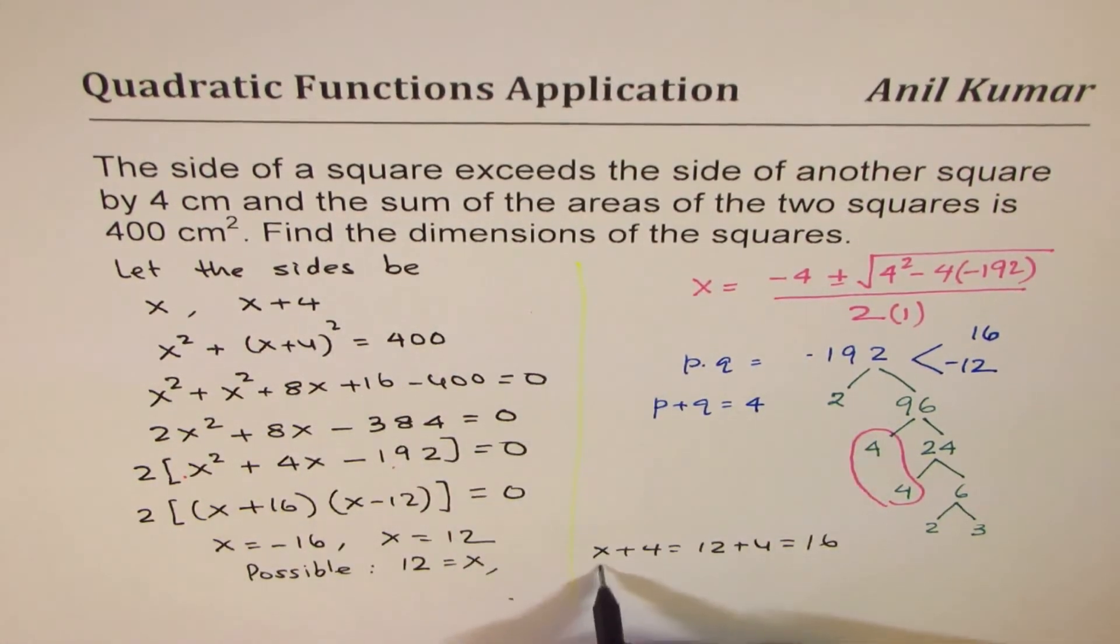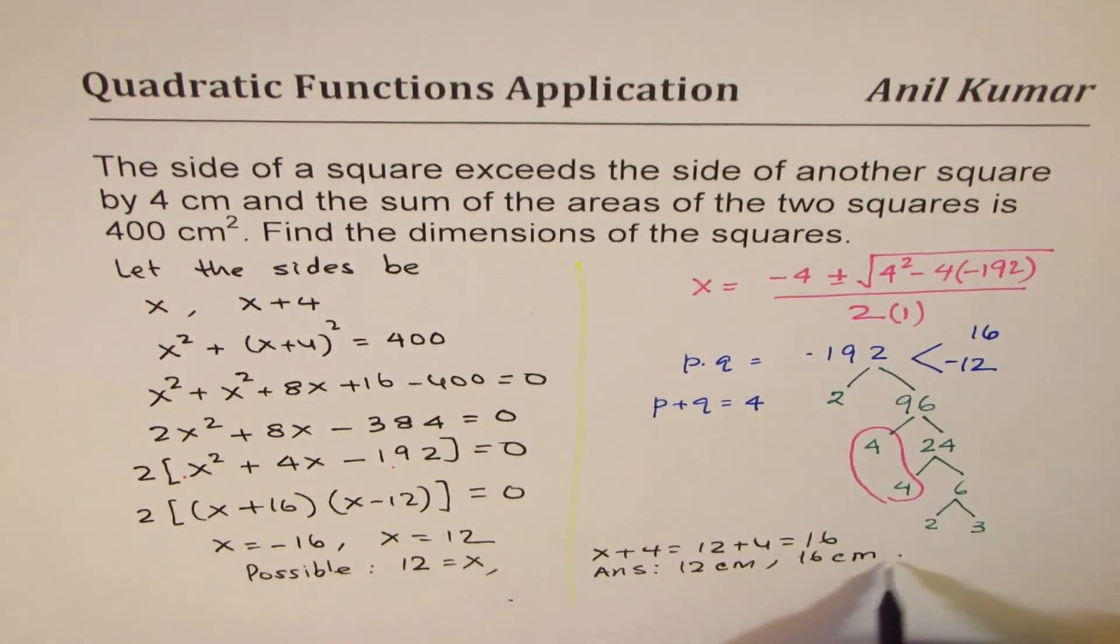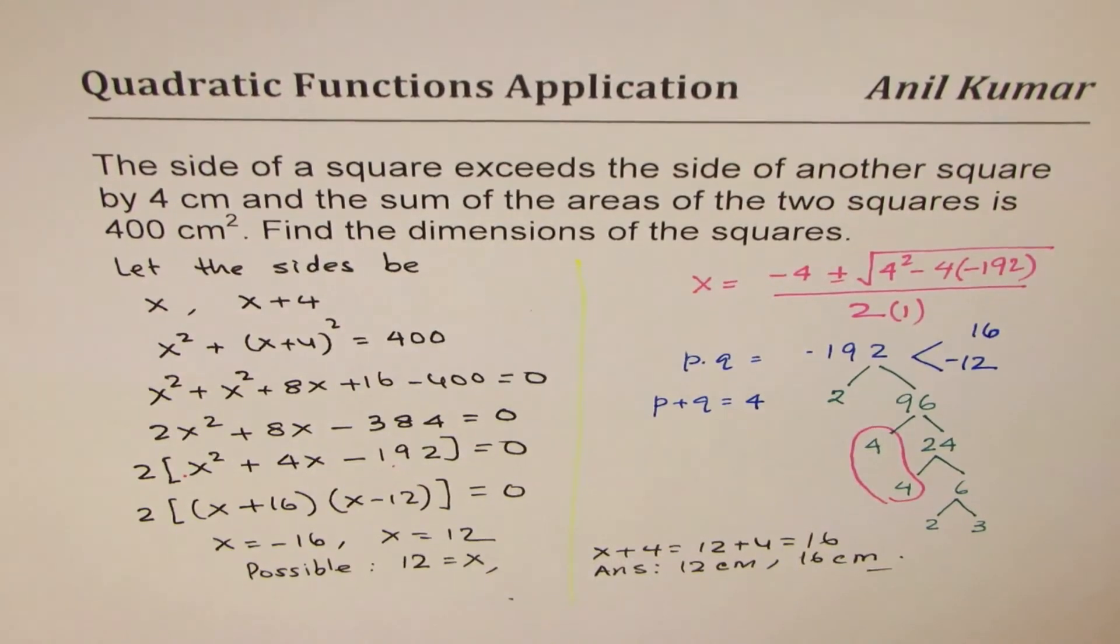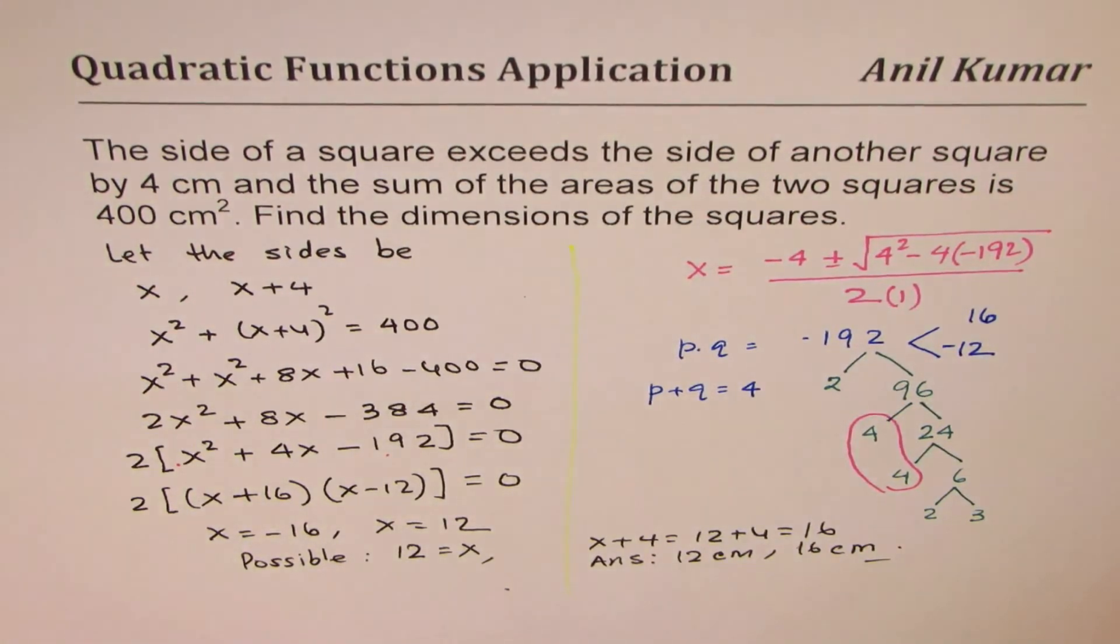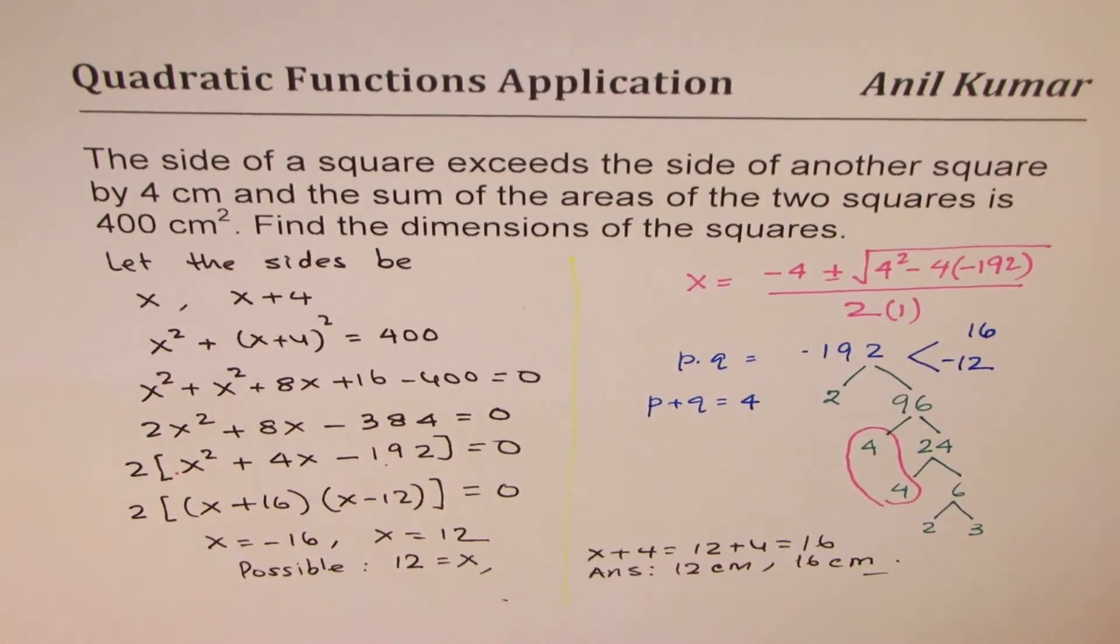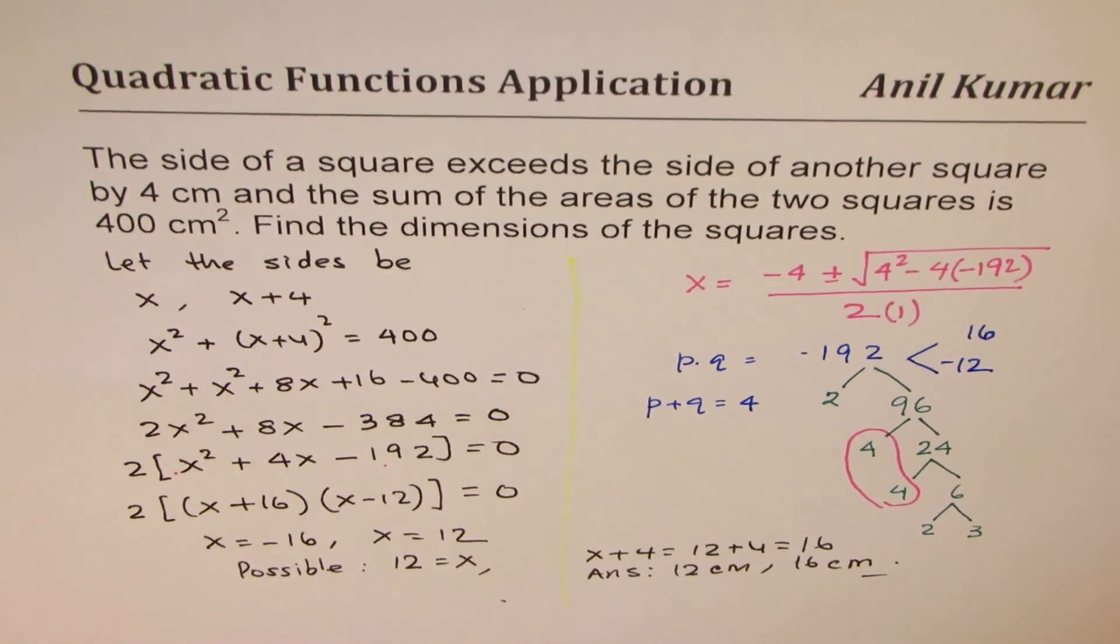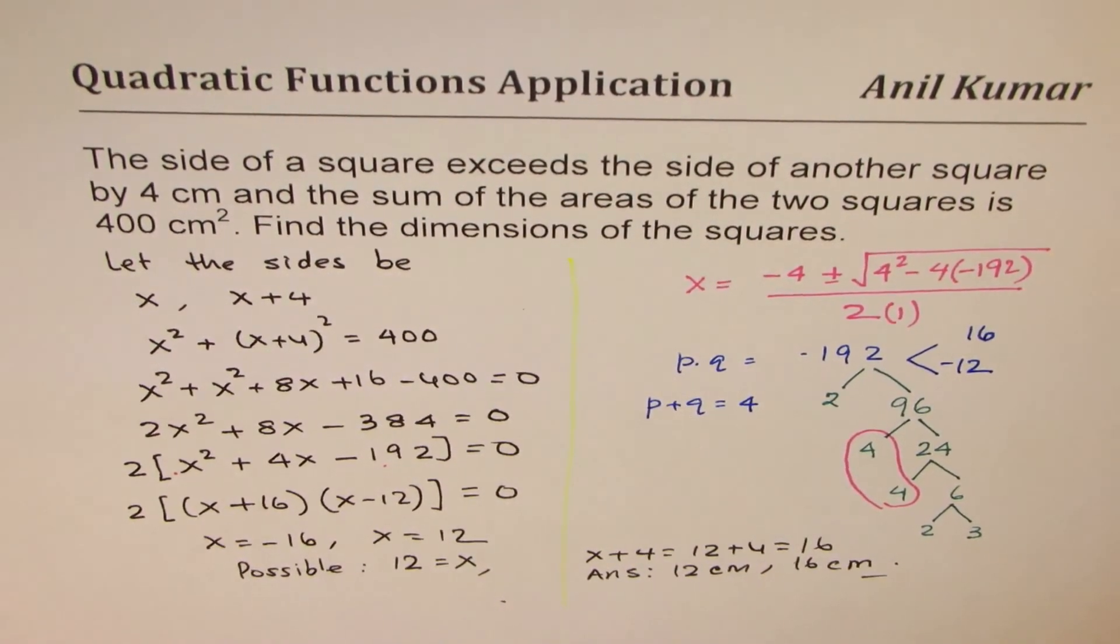So our answers are 12 centimeters and 16 centimeters. Does that make sense? These are the two squares whose dimensions are given to us, and the sum of their areas will be 400. That is how it could be solved. I hope that helps. Feel free to share my videos, and if you like and subscribe that would be great. Thank you and all the best.